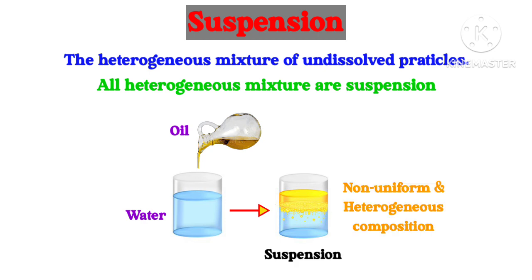Oil and water form a non-uniform and heterogeneous composition. Because if we leave oil and water for some time, we observe that oil and water get separated. Water settles down to the bottom and a clear layer of oil appears at the top. We can spot the particles of oil and water with the naked eye.